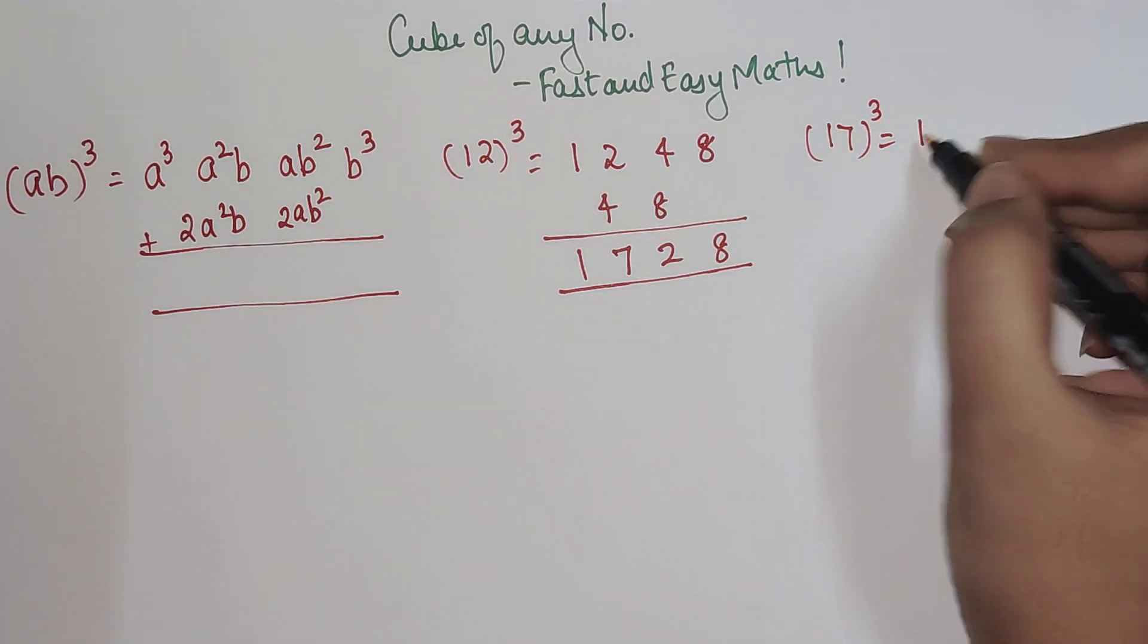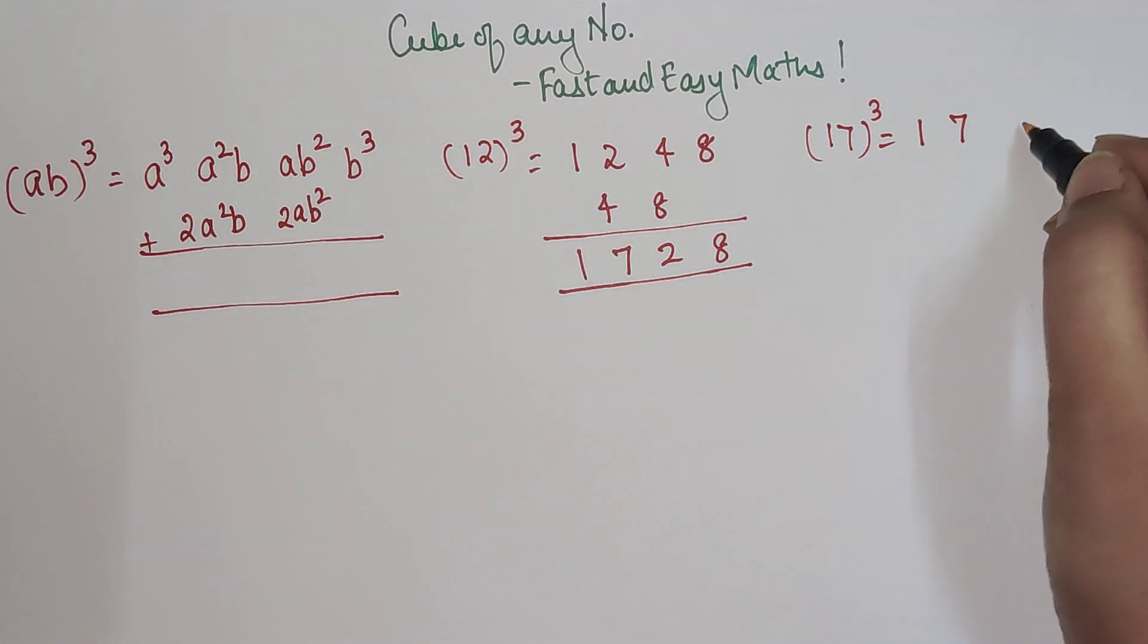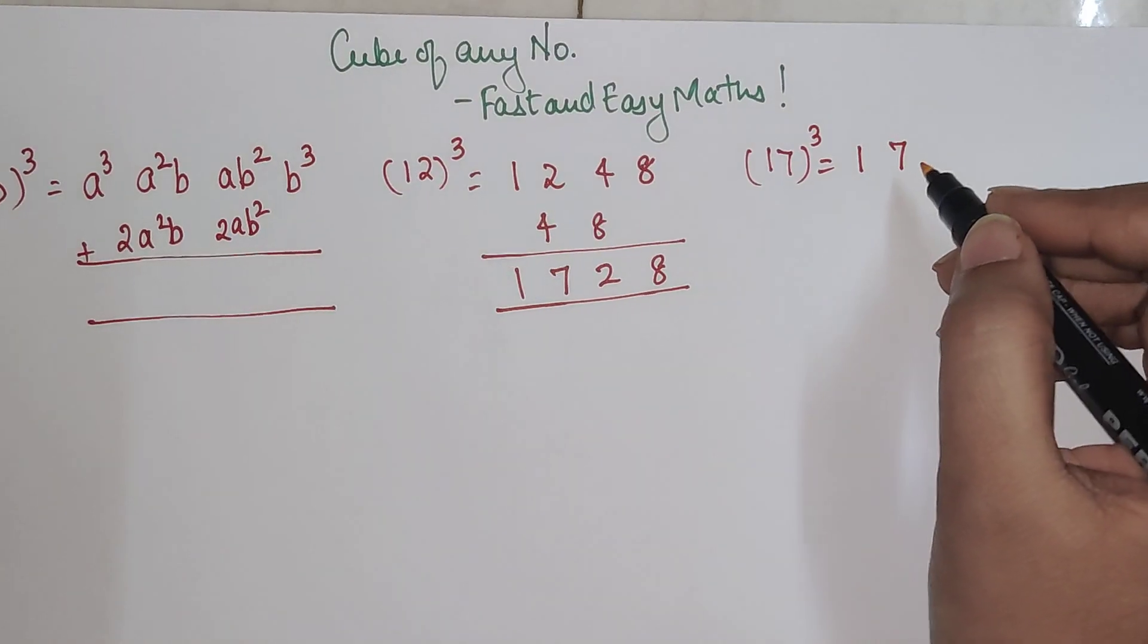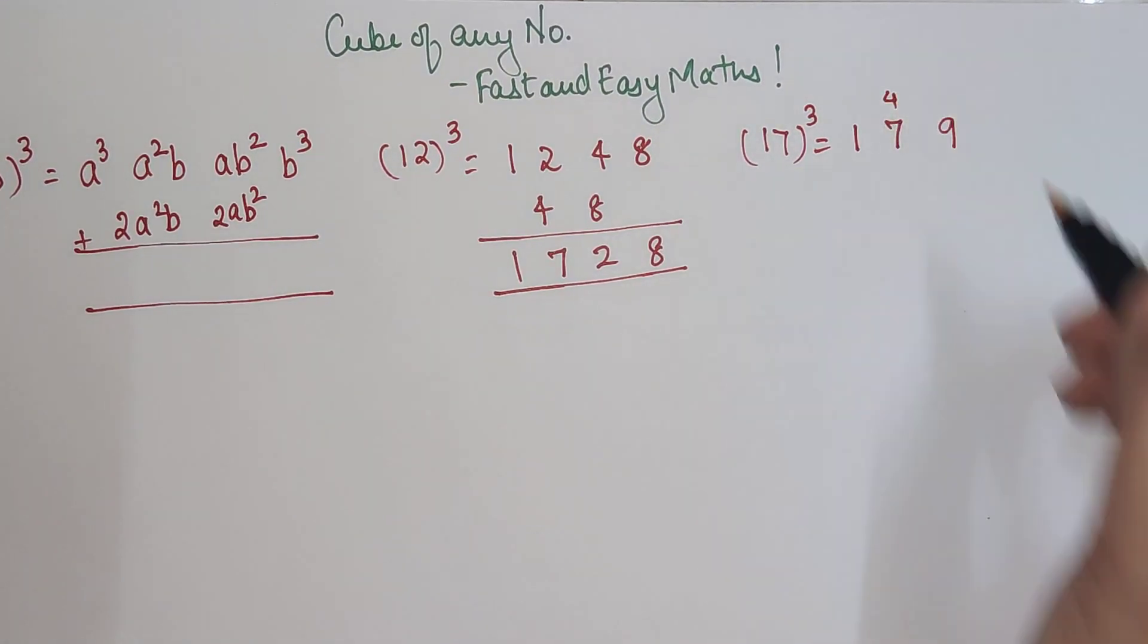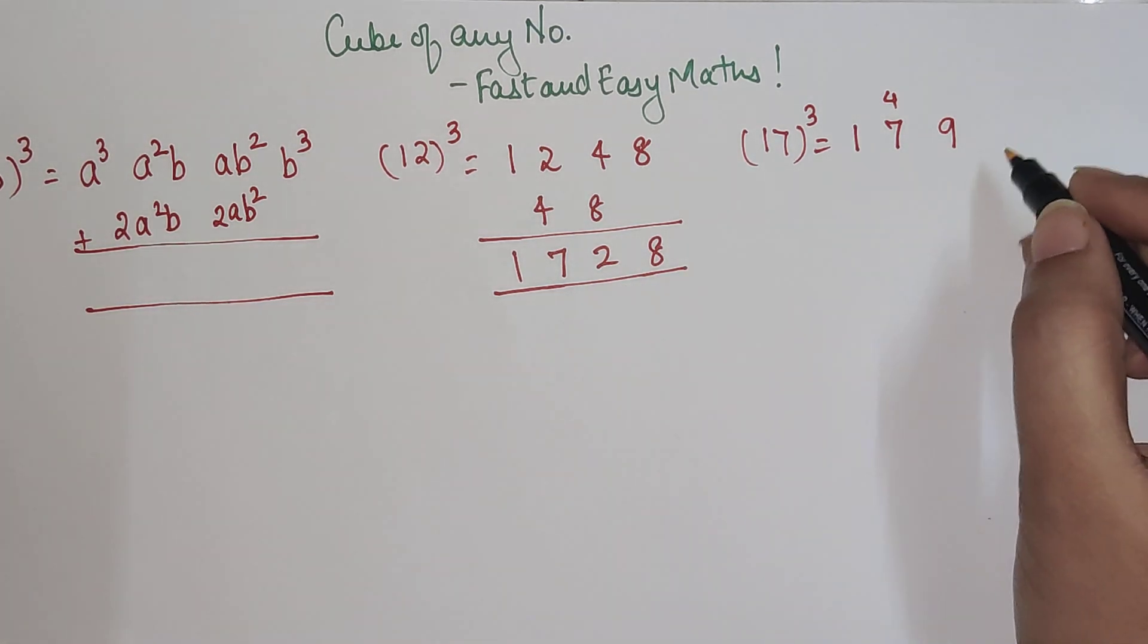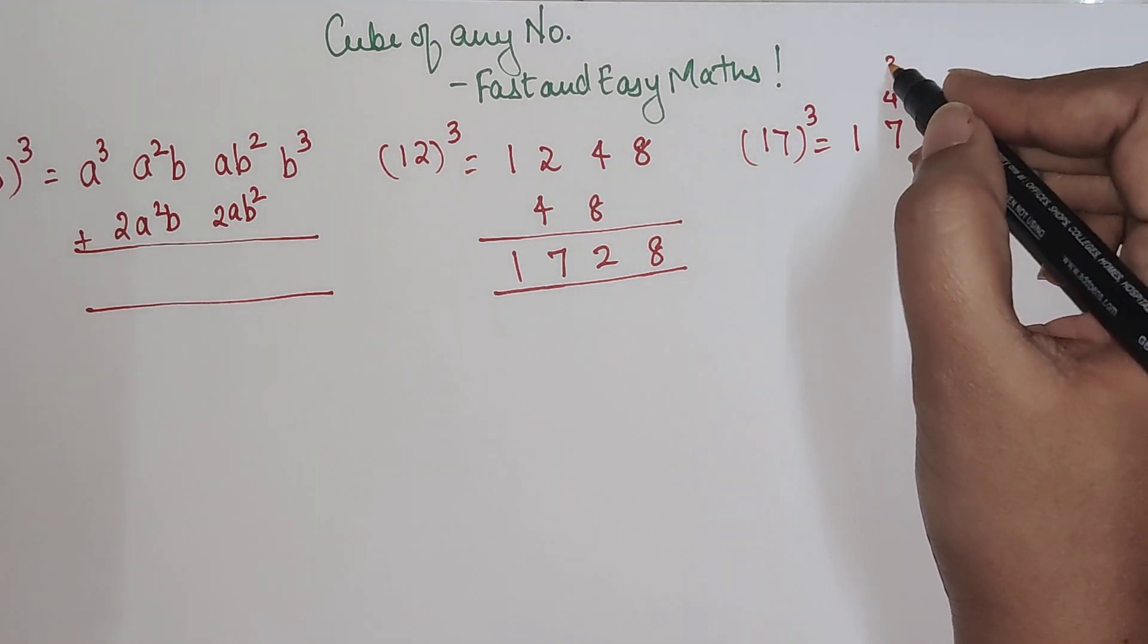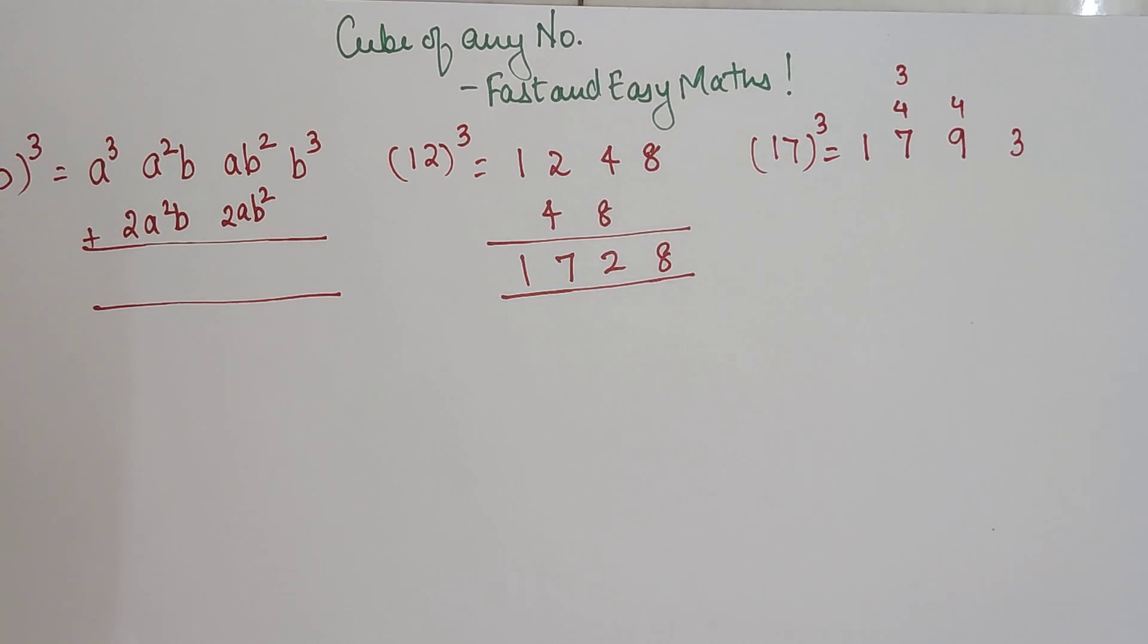Very quickly we will do 17³ as well. So we have 1, then 1² × 7 that is 7, then 1 × 7² which is 49. Now understand, whenever you have something like this, you will write 9 over here and 4 over here. Then 7³ which is 343 - so 3 will be written here, 3 and 4. This is the way of writing your numbers or writing your values.